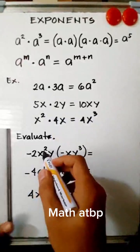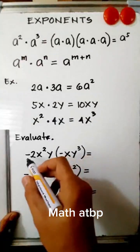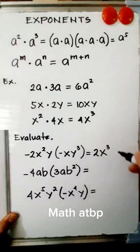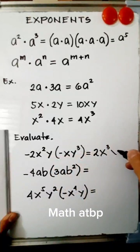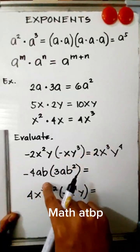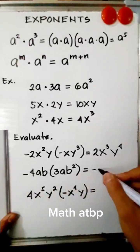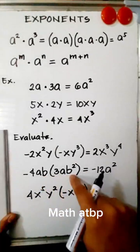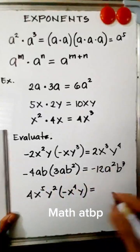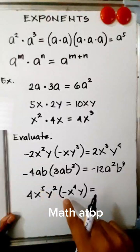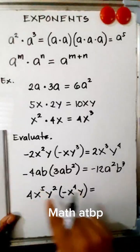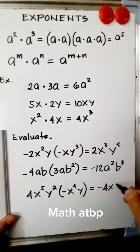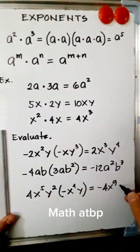Let us evaluate negative 2x squared y times negative xy cubed. Negative 2 times negative 1 is positive 2. x squared times x is x cubed. y times y cubed is y to the 4th. Next, negative 4ab times 3ab: negative 4 times 3 is negative 12, a times a is a squared, b times b squared is b cubed. And 4x raised to the 5th times y squared times negative x to the 4th times y: 4 times negative 1 is negative 4, x to the 5th times x to the 4th is x to the 9th, and y squared times y is y cubed.